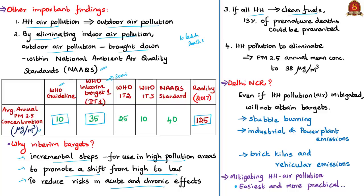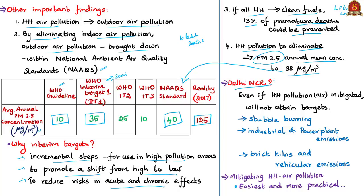If all households move to clean fuel such as liquefied petroleum gas, about 13% of premature deaths in India could be prevented. The study found that if indoor household air pollution is eliminated, India's average annual PM2.5 could drop to 38 micrograms per cubic meter — within the National Ambient Air Quality Standards prescription of 40 micrograms per cubic meter. However, in Delhi NCR, even if indoor pollution is mitigated, PM2.5 would not attain targets because the major contributors are stubble burning from neighbouring states, industrial and power plant emissions, and brick kilns and vehicular emissions.